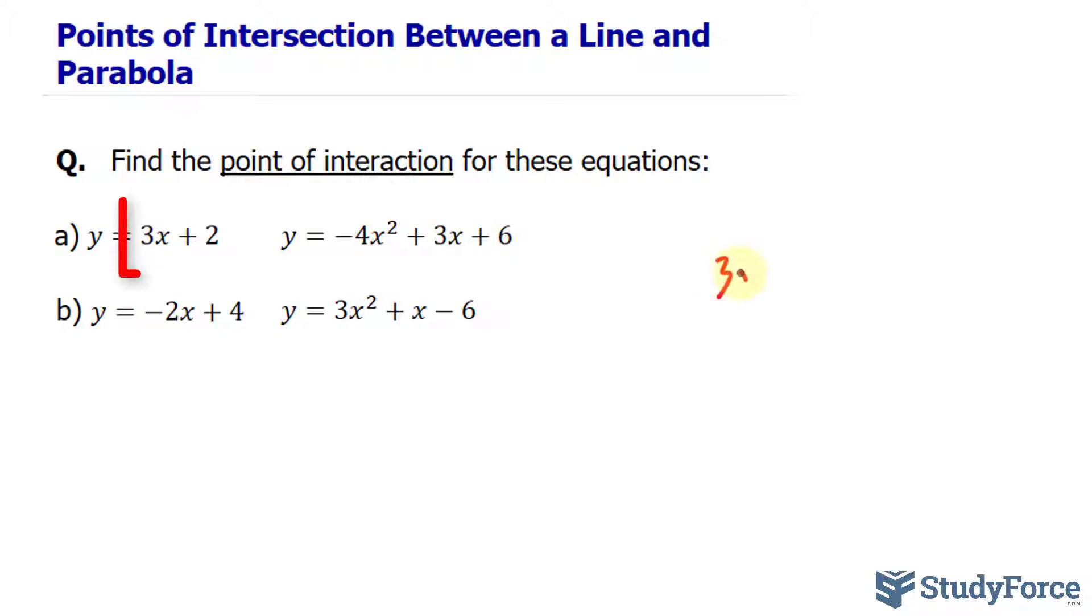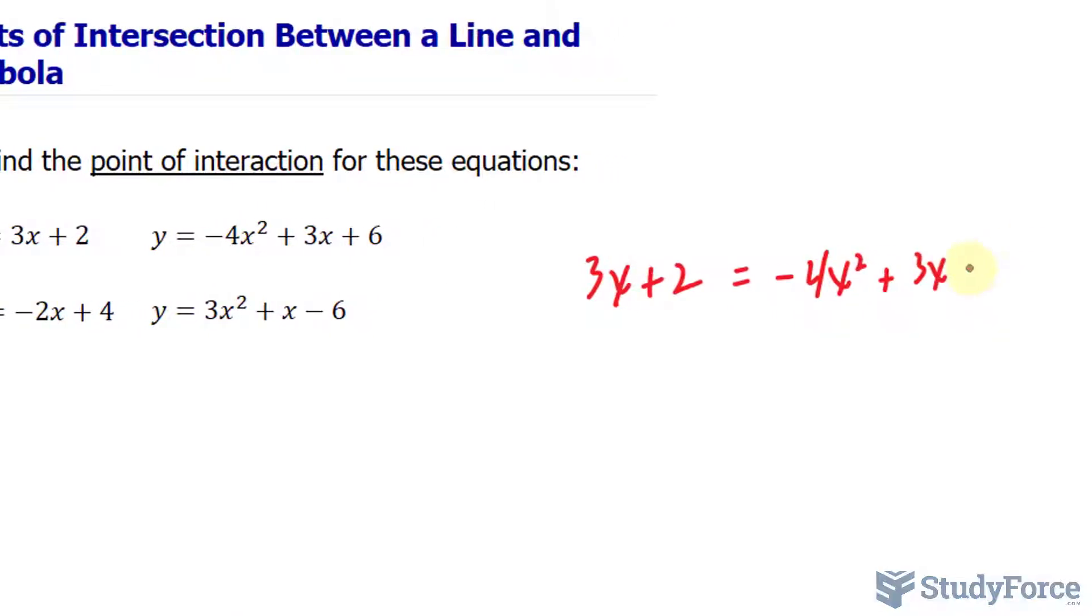I have 3X plus 2, that's this equation, is equal to that equation: negative 4X squared plus 3X plus 6.